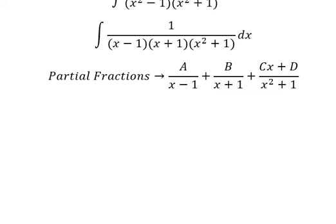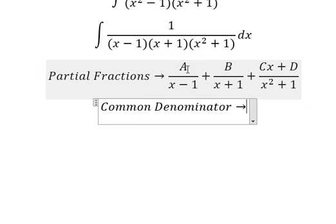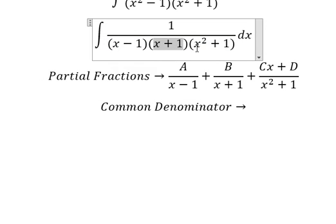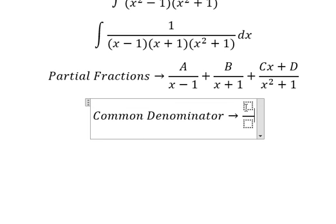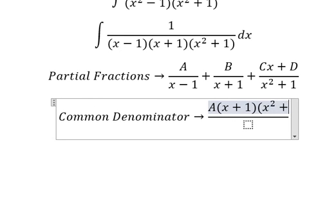Now we do common denominator. So about this one, it is missing about x plus 1 and x square plus 1. So capital A multiply by x plus 1, so capital A multiply by (x plus 1)(x square plus 1).